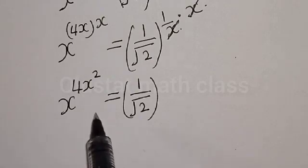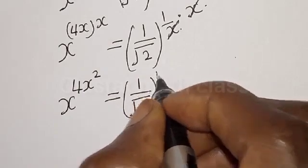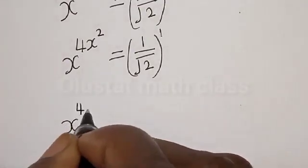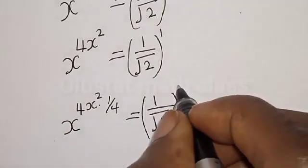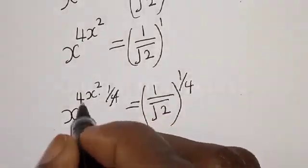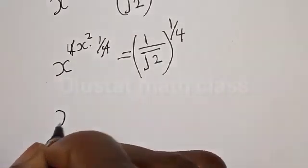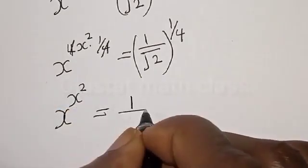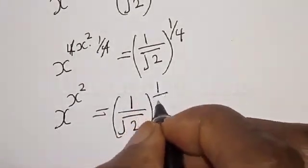Again, let's divide the exponents of both sides by 4. Remember that here x is also raised to power 1. Then we have x raised to power x squared, equal to 1 divided by root 2, raised to the power of 1 divided by 4.